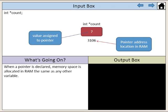When a pointer is declared, memory space is allocated in RAM the same as any other variable. Here we've declared the pointer count with an int data type. We haven't assigned a value to the pointer, but 3106 has been allocated as the pointer's address location in RAM where the value will be stored.